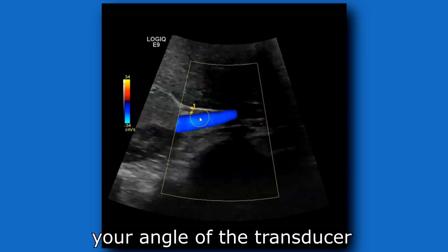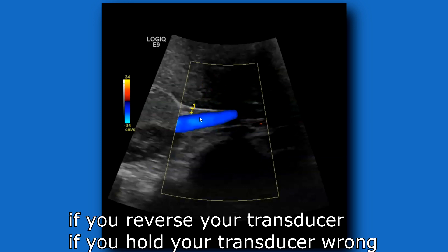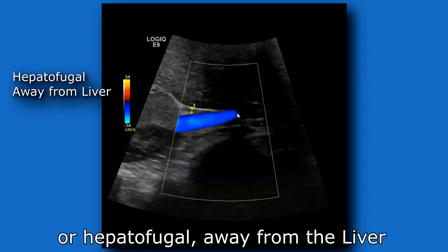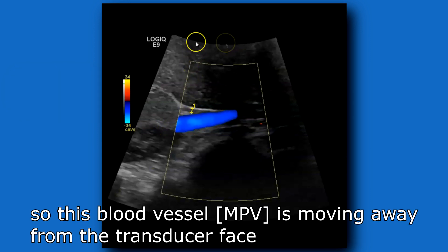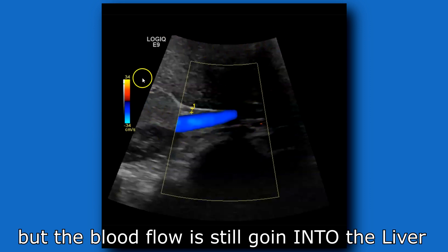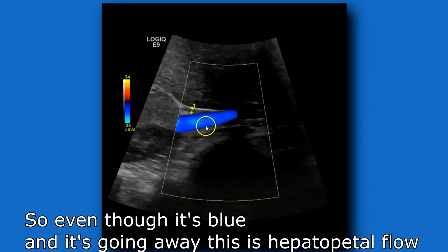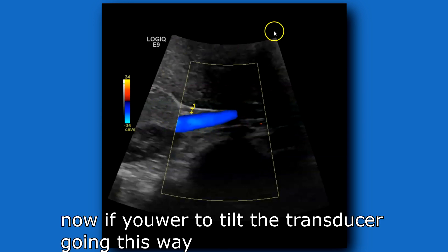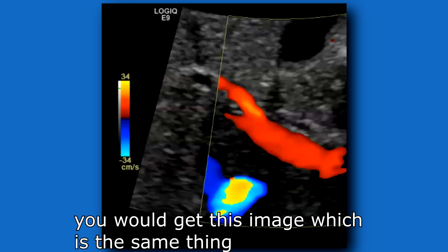Now if the color becomes inverted, that goes out the window. Also your angle of the transducer — if you reverse or hold the transducer wrong — changes things. Here we have the portal vein and we always want to know whether the flow is hepatopetal, towards the liver, or hepatofugal, away from the liver. This blood vessel is moving away from the transducer face, but the blood flow is still going into the liver, so even though it's blue, this is hepatopetal flow.